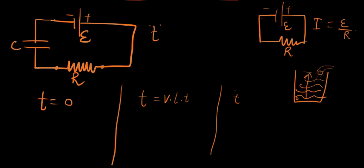So the current, let's call it I naught at T equals zero, can be given as directly E over R. And VR equals E at time equals zero.